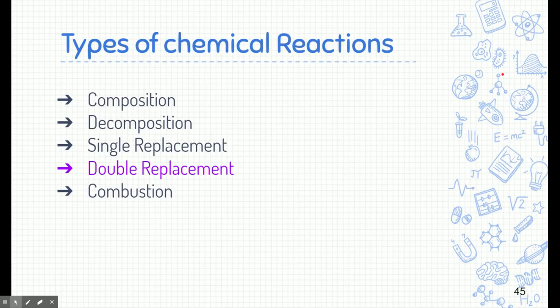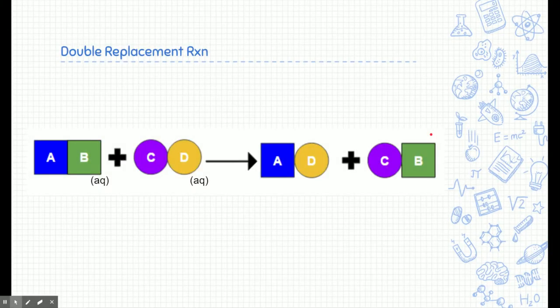Remember, we talked about many types of chemical reactions. You should be able to recognize many of these reactions if they're given to you, but slowly we're trying to learn how to write them. The first two — composition and decomposition — you should be able to predict the products if given the reactants. We're going to skip single replacement for now and go straight into double replacement reaction. We'll talk about combustion at a later date.